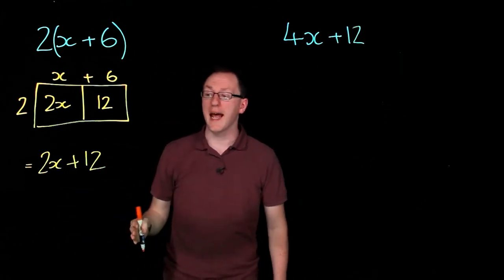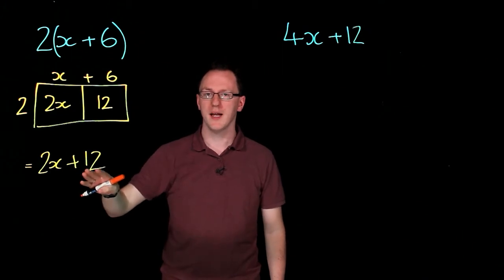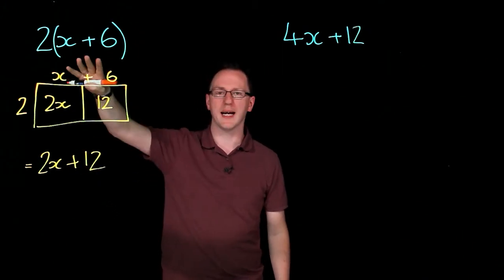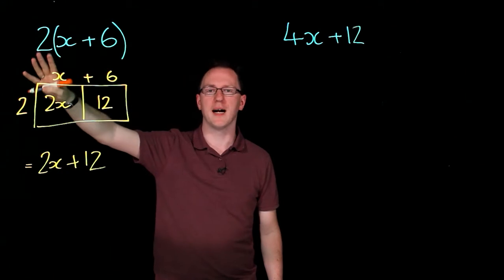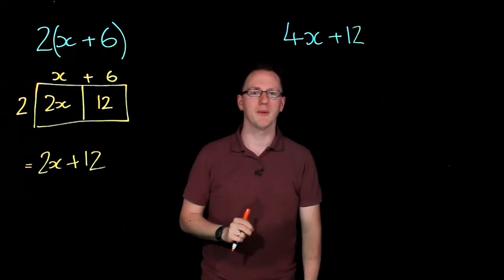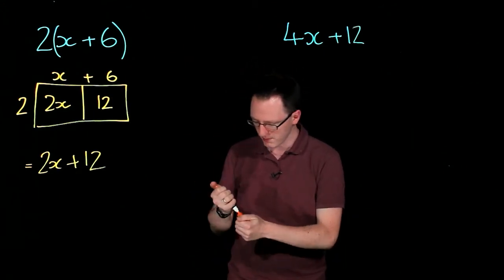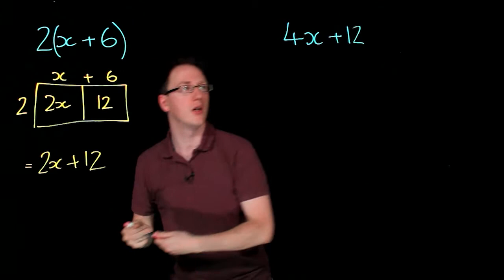But what if instead we were given 2x plus 12 and asked to factorise it? That means asked to write it with brackets with all of the common factors brought to the front. Well here's an example over here 4x plus 12 where I'm going to try to factorise it. So I'm going to start with my rectangle again. Let me draw my rectangle.